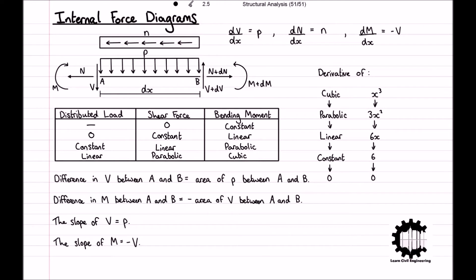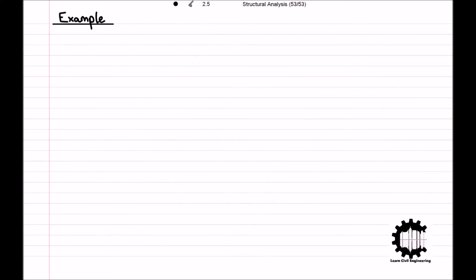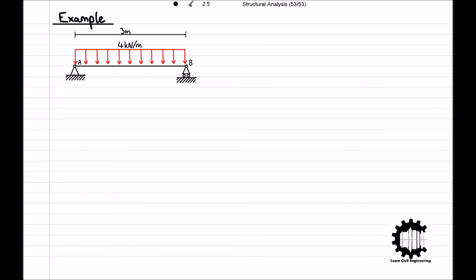Now let's apply this theory to a simple example. Consider a three-metre long bar supported by a hinge support at point A and a roller support at point B. Additionally, there is a uniformly distributed load of 4 kN/m being applied to the entire length of the bar. The first step is to calculate the support reaction forces.